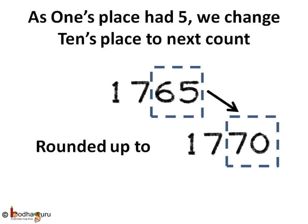So 10's place would be increased to next count, that is 7. And 1's place is set to 0. So it is 70. So if we round the number 1765 to its nearest 10 by rounding up, we will get 1770.